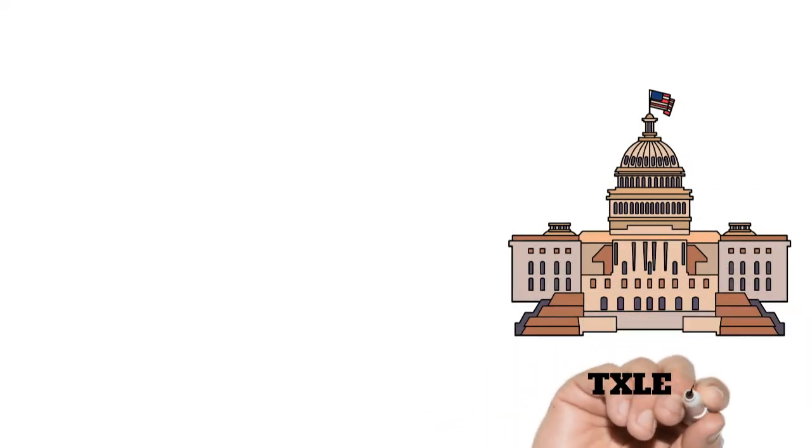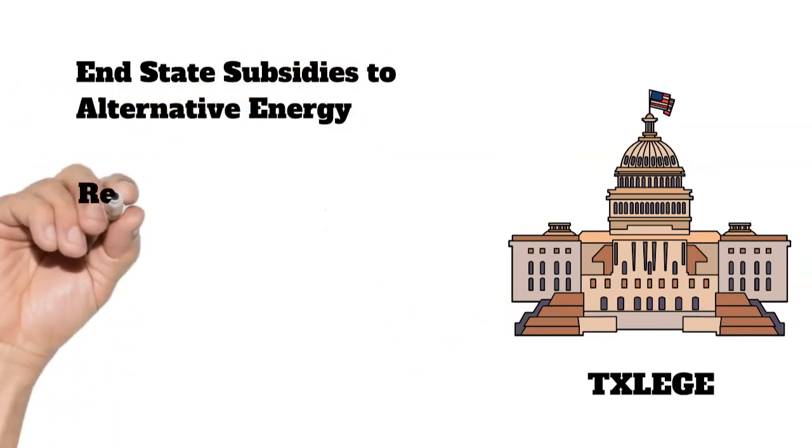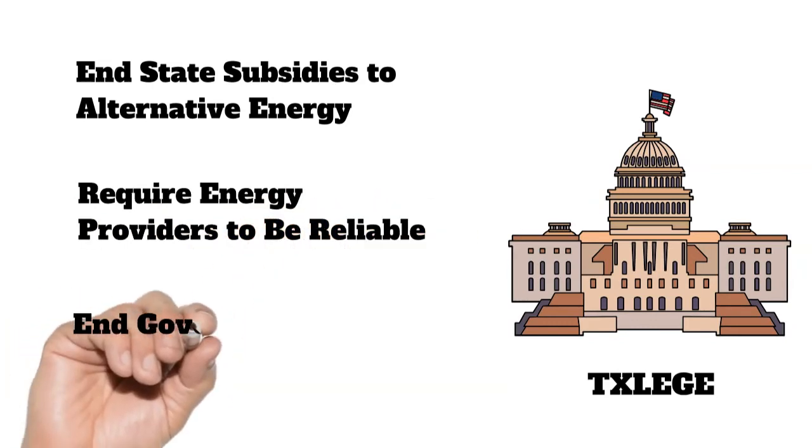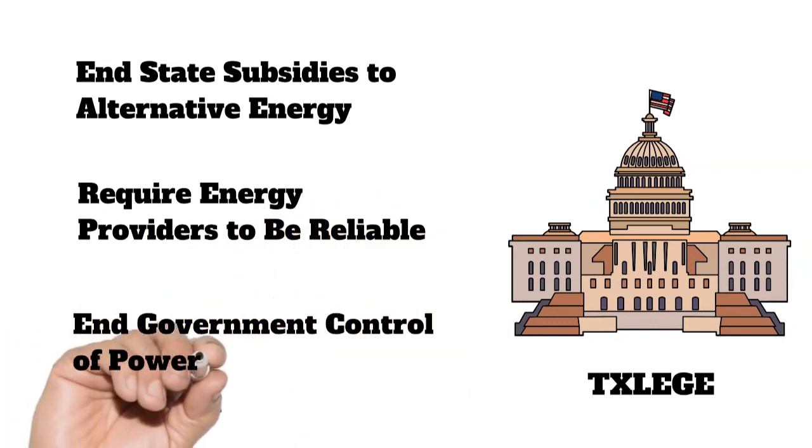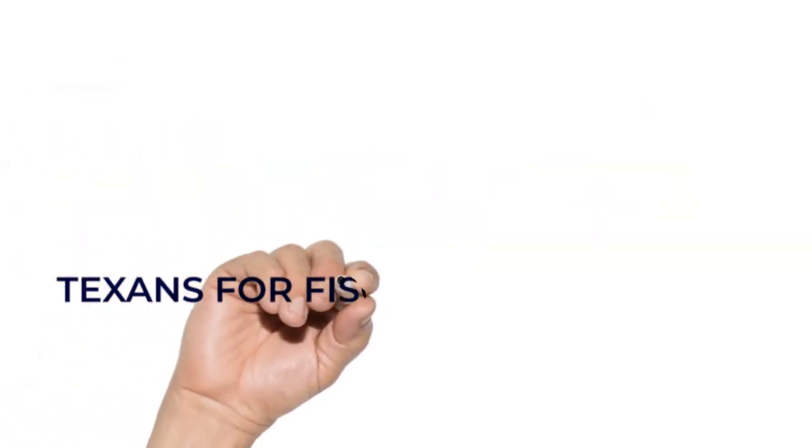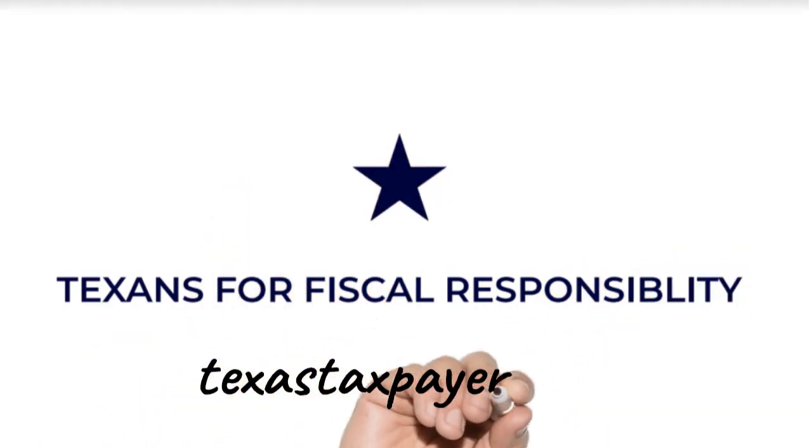While further reforms are most assuredly needed, action by the Texas legislature on these three items, ending state subsidies to unreliable power through Chapter 312 and 313, requiring power providers to be at least partially reliable, and ending government control of electrical generation would go a long way to preventing a future crisis. For more information on this issue and other potential reforms to create a better Texas for taxpayers, visit TexasTaxpayers.com.